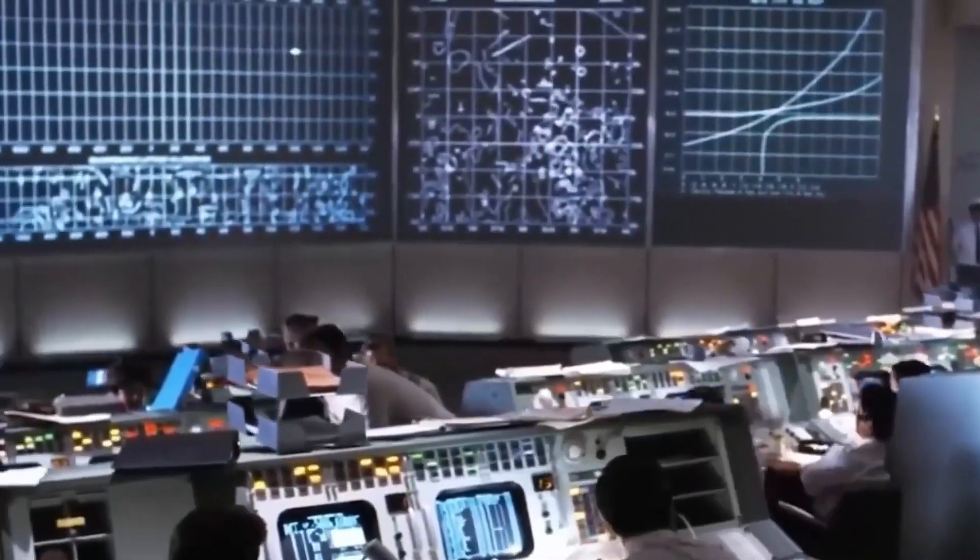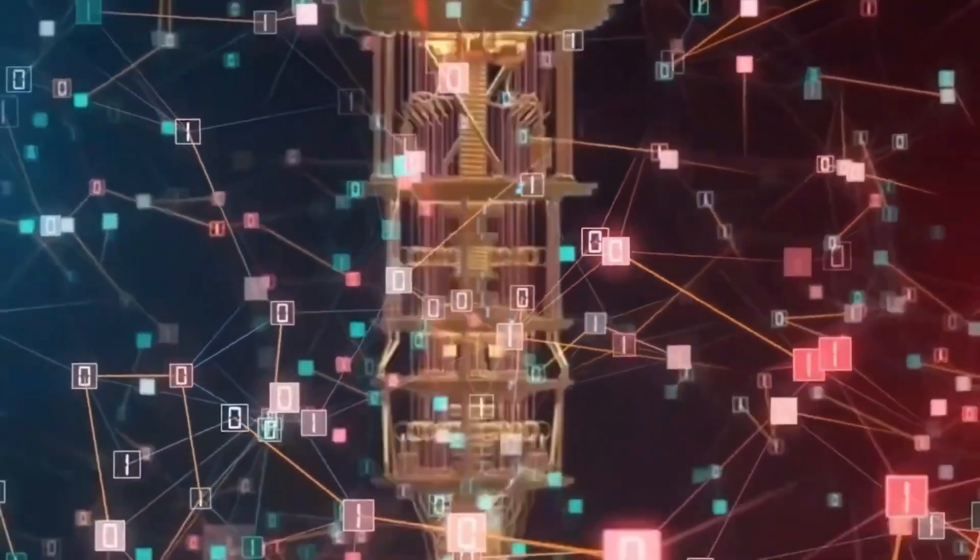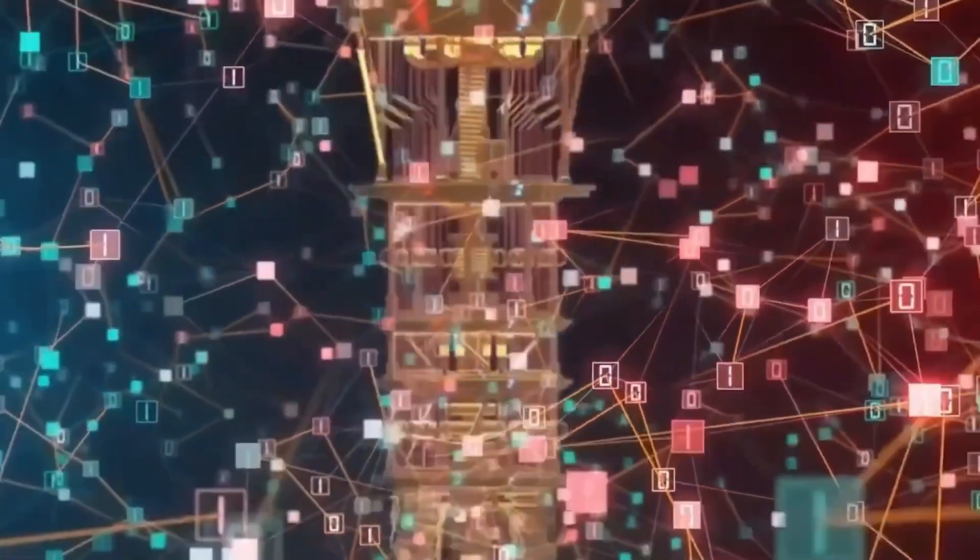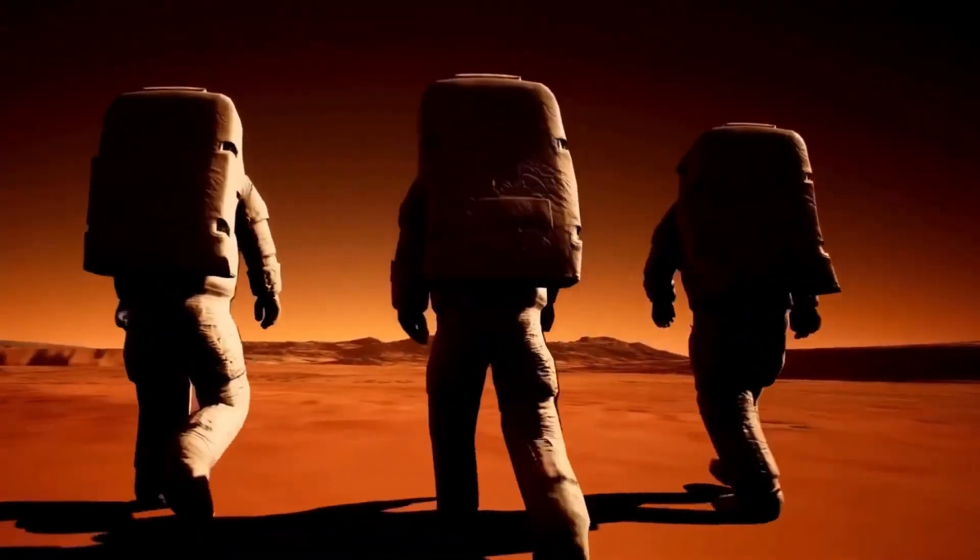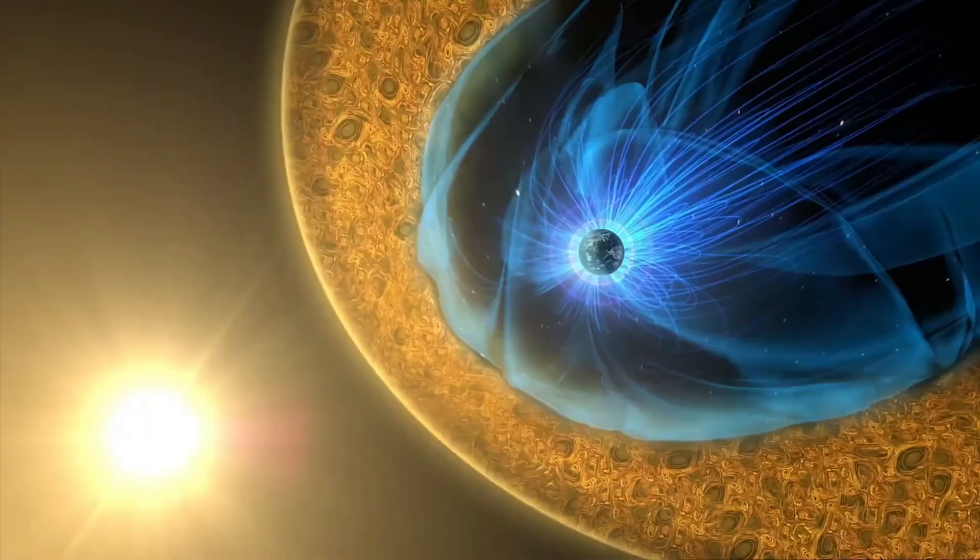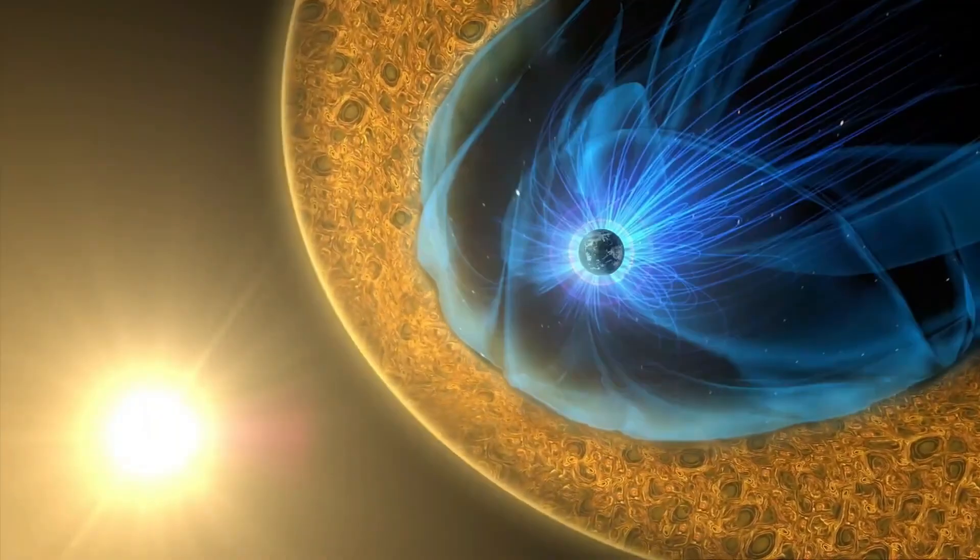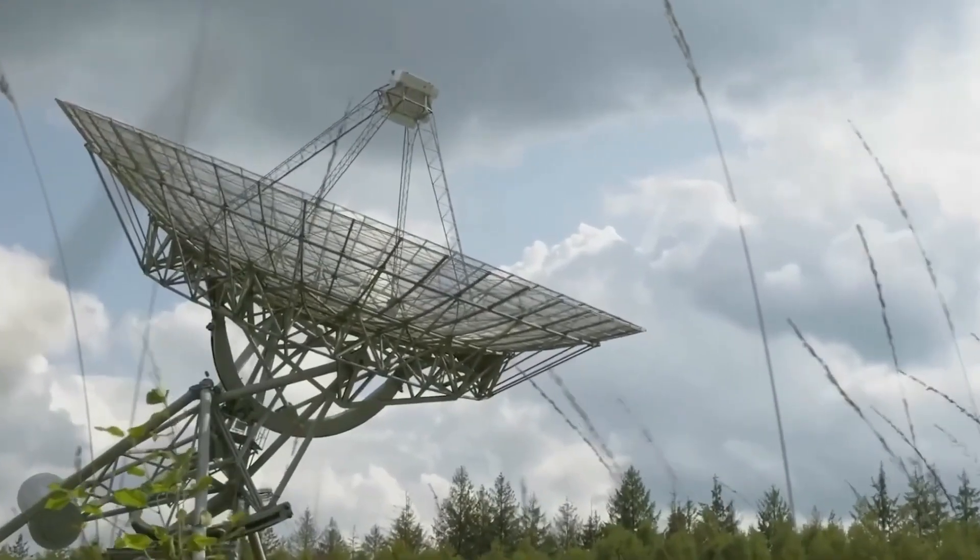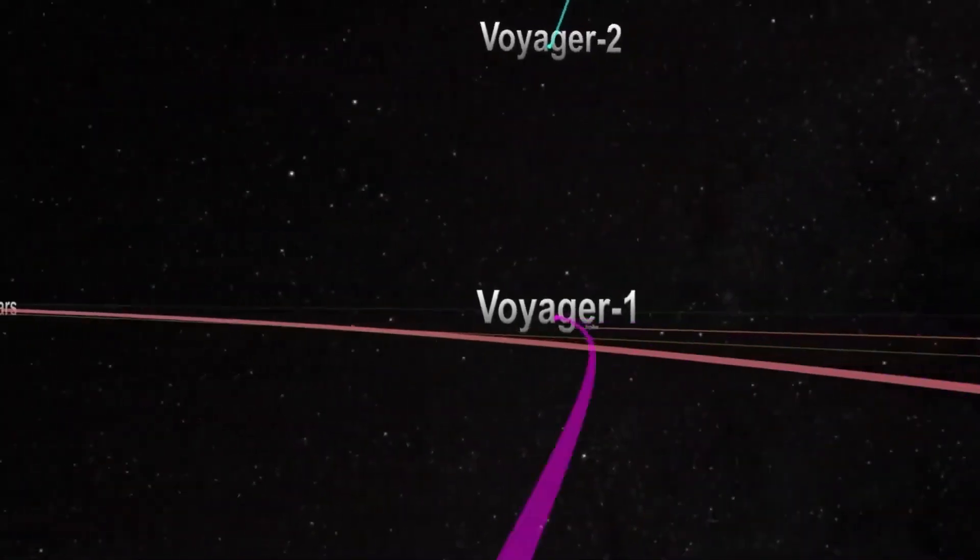Instead of a clean break between solar space and interstellar space, Voyager 2 found overlapping zones of magnetic interference, sudden pockets of high-pressure plasma, and erratic radiation spikes. These weren't supposed to be there. They don't fit into any model. It's like trying to define the shape of a cloud with a ruler.